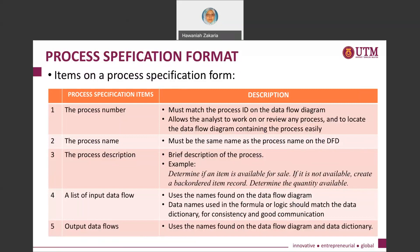The first item is the process number. Process specification always relates to a particular process, and you identify a process through the number given to it. In your DFD, every process must be numbered. In the process specification form, the process number must match the process ID on the data flow diagram. The next item is the process name, which must also be the same as the process name on your DFD.